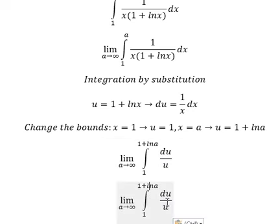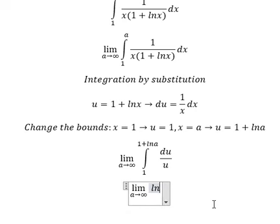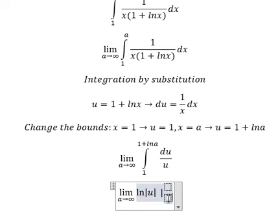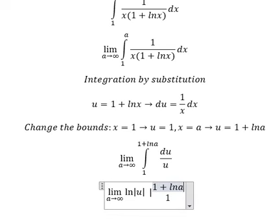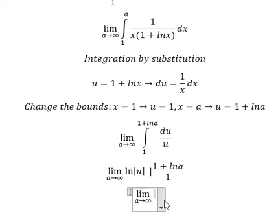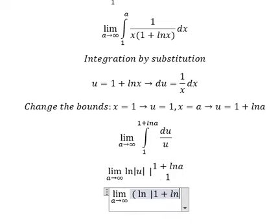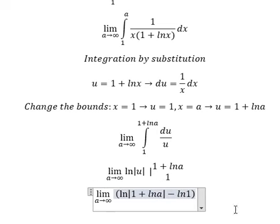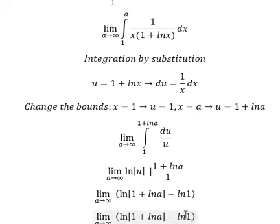So the integration of this one gives us ln of the absolute value of u, and we put the bounds from 1 to 1 plus ln(a). And we know that ln(1) equals 0.